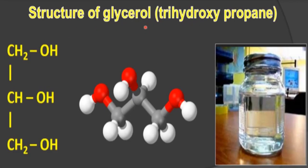Now about the structure of glycerol, which is attached with fatty acids to make simple lipids. Glycerol is also called trihydroxy propane. You can see glycerol in the chemistry lab as a transparent liquid. Its chemical structure is CH₂OH–CHOH–CH₂OH — that is trihydroxy propane.